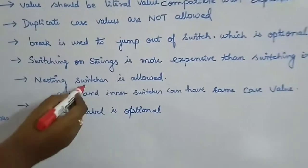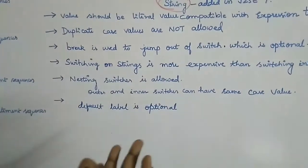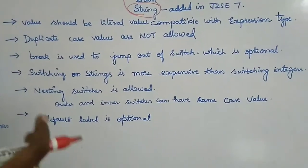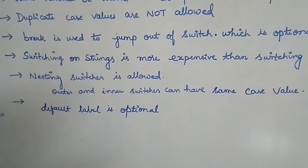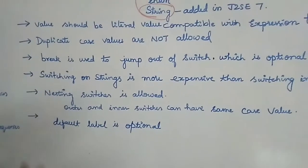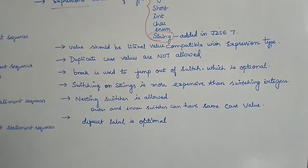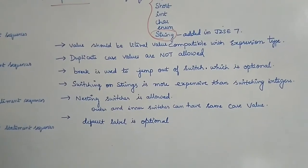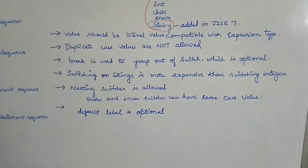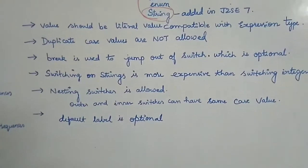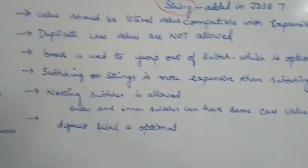When you have nested switches, the case values of the inner and outer switch can be the same — there is no restriction, because once it enters the inner switch it evaluates only that switch, so there is no conflict. The default label is also optional, similar to the else in an if-else ladder, and executes when none of the case values match.